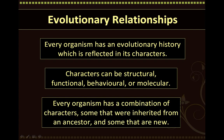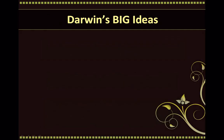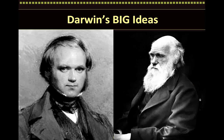Every organism has a combination of characters — some that were inherited from an ancestor and some that are new, for example, those that are acquired through adaptation. As you may know from your previous studies in biology, Charles Darwin had many big ideas that revolutionized the field of biology as we know it today. Two of his ideas have had applications to the study of phylogenetics.